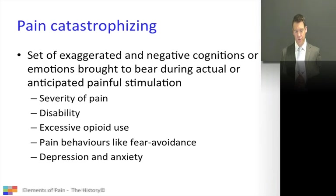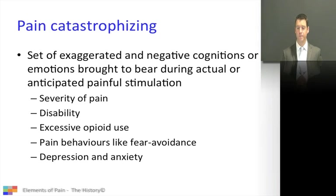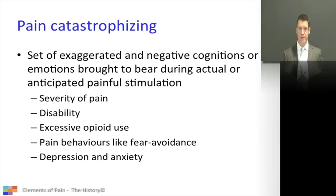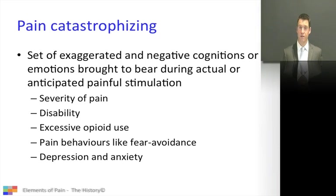The three aspects of catastrophizing that Sullivan described are: rumination of things — they think about things over and over; they magnify their thoughts; and they feel hopeless about their situation.